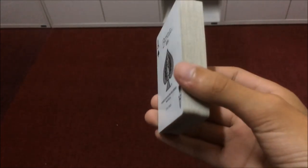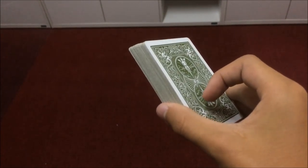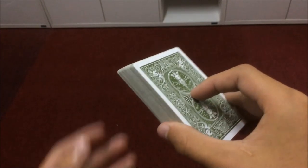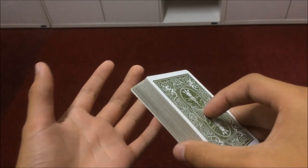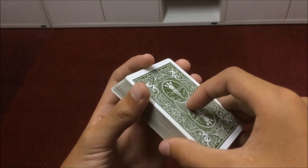Then you put it on top. That is the Hindu shuffle. Let me show the grip quickly. Right hand: middle, ring at the right hand side, thumb on the left hand side, first finger resting at the top of the deck.